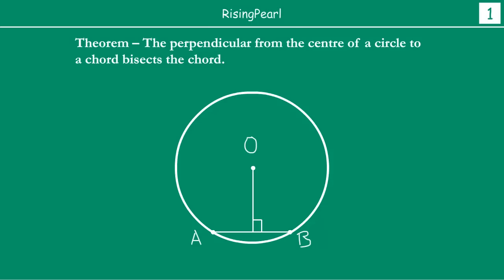Now what we want to do is drop a perpendicular. From point O we can always draw a perpendicular on the line AB. This line intersects AB at a point — let us call this point P. So the theorem is telling us that this perpendicular drawn from the center on the chord AB will actually bisect AB, meaning this side will become equal to this side, so AP is equal to PB.